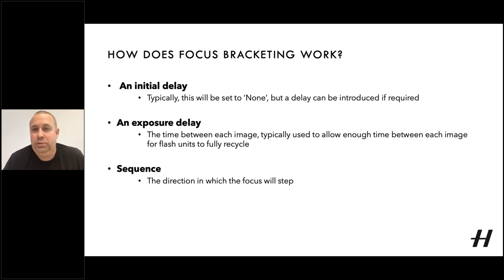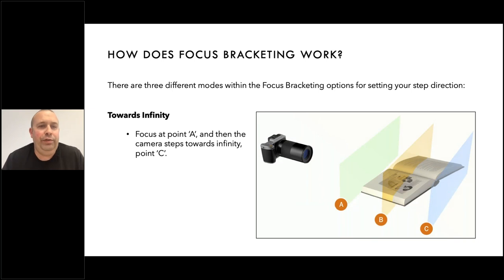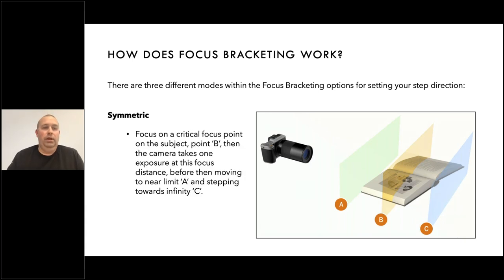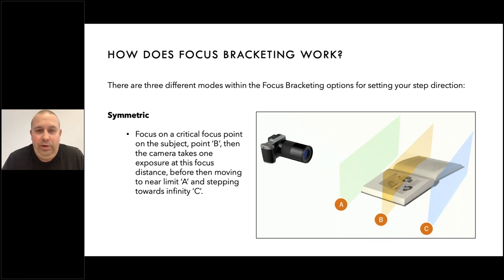Looking in a little more detail at the sequences, there are three different options within the focus bracketing functionality. The first and probably the most common is towards infinity: we focus at point A on the nearest edge of the subject, and then step the camera towards infinity at point C. Alternatively, we can go symmetric — this is where we focus on a critical point on the subject, say point B, to ensure that we get that part optimized for focus.